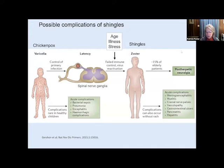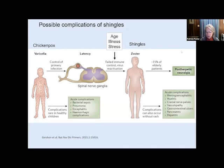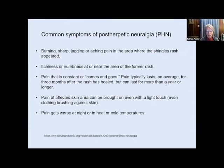Complications can also occur with shingles. The most common complication — about 15% of patients — is post-herpetic neuralgia, or PHN. This is a pretty miserable state. It is a burning, sharp pain that is touch-sensitive and can go on for months, or even years. The pain is quite severe and there is really no treatment for it. The rate of shingles and PHN goes up fairly sharply with age.